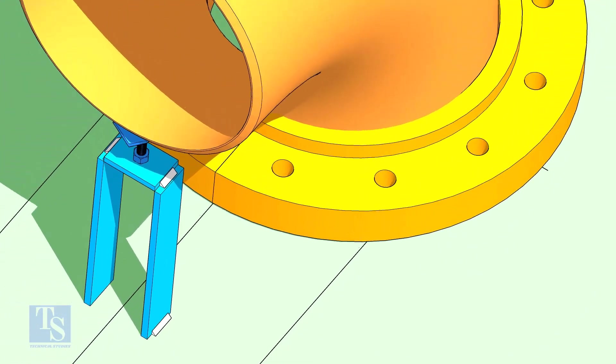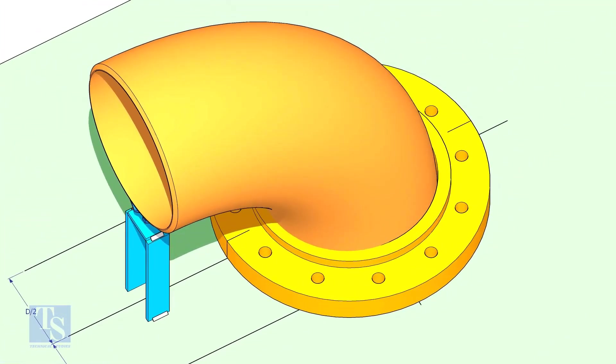When it is balanced, tack weld on both sides of the elbow.